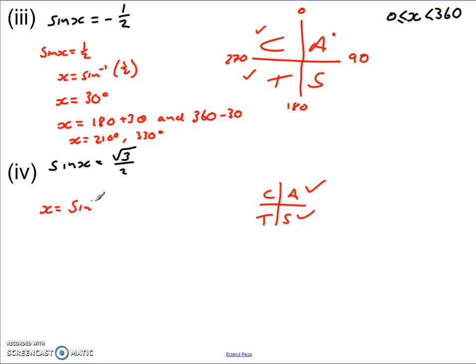So I know in this case, x is equal to sin minus 1 of root 3 over 2. Sin minus 1 of root 3 over 2 gives me 60 degrees, so that's my first solution. This second one is 180 minus that 60 degrees. So my two solutions in this case are x equals 60 degrees and 120 degrees.